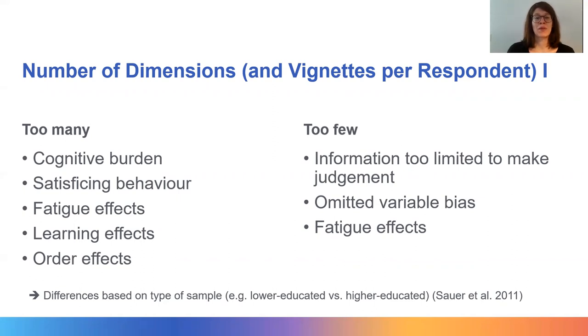A low number of dimensions might lead to fatigue effects if there is not enough variation between the vignettes, particularly in designs involving a low number of dimensions but a higher number of vignettes per respondent. Whether a given design is perceived as too complex or too simple also depends on the type of sample used — for example, whether the sample is lower or higher educated on average. Researchers should keep in mind their target population when deciding on the number of dimensions and vignettes per respondent.